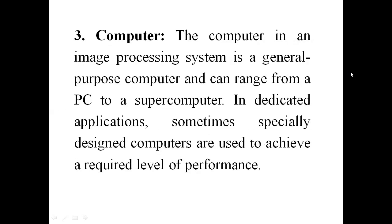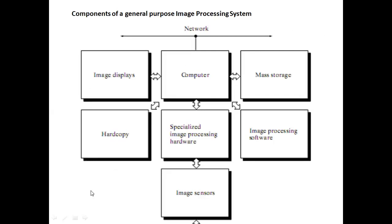So these are the components of the image processing system. The first is image sensors, which are used to capture and acquire the image. The image sensor consists of a sensing device which converts incident light energy into its proportional electrical signal, and it also includes a digitizer for converting analog images to digital form.